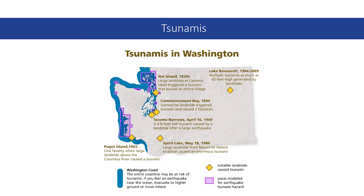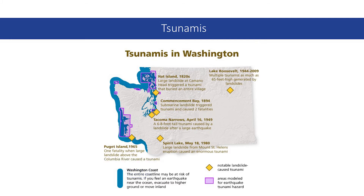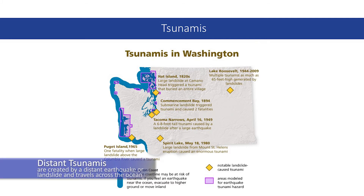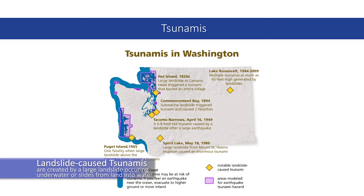The most common cause of tsunamis is a large earthquake below or near the ocean floor. Landslides and volcanic activity can also trigger a tsunami. Tsunamis are series of waves that are often large and destructive. Washington is at risk of four main types of tsunamis: distant tsunamis, which are created by a distant earthquake or landslide and travel across the ocean; Cascadia subduction zone tsunamis, created by a large magnitude 8 to 9 earthquake off the Washington, Oregon, or British Columbia coast; local earthquake tsunamis, created in a large body of water from an earthquake on local faults like the Seattle or Tacoma faults; and landslide-caused tsunamis, caused by a large landslide occurring underwater or slides from land into water.